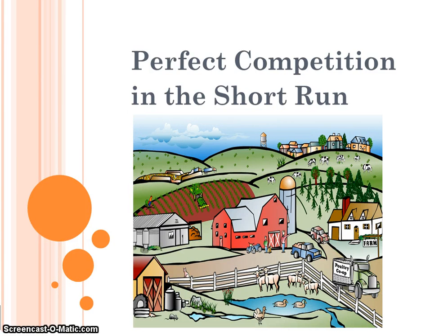Today we're going to look at one of the four market structures we will be studying in this class. This market structure is called perfect competition. In unit 5 we're going to study the alternate market structures, which are monopoly, monopolistic competition, and oligopoly. But today we're going to start by learning the perfect competition model, because we're going to demonstrate concepts we've learned in this unit, such as identifying profit maximization, through the perfect competition model.